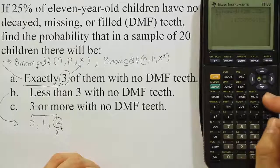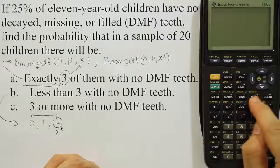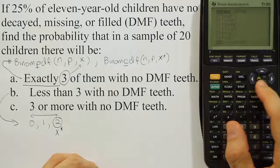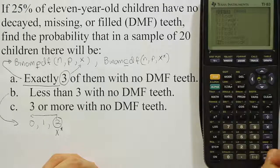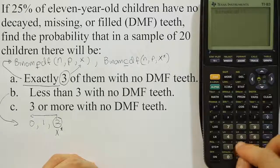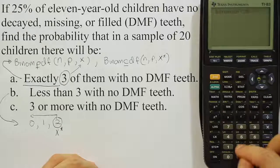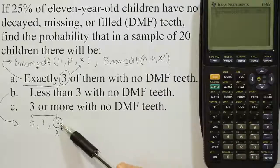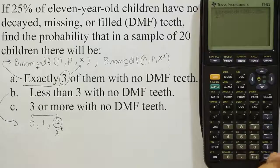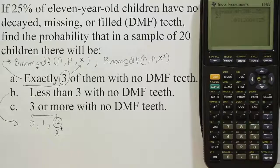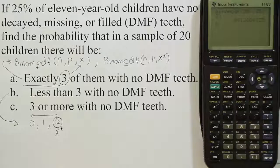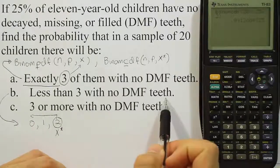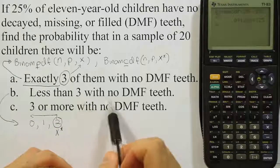Let's do that in our calculator. We're going to press the second key, then we're going to press the vars key. Go down to where we see binomcdf this time, past the binompdf, take binomcdf. In my calculator it's option A. Then we're going to enter the n again, which is 20, comma, the p which is 0.25, and then comma. Lastly we're going to enter this 2 for our calculator. Close it up, hit enter, and we get the value 0.0913, or basically 9.1% or so. So about a 9.1% chance that there'll be less than 3 children with no DMF teeth.